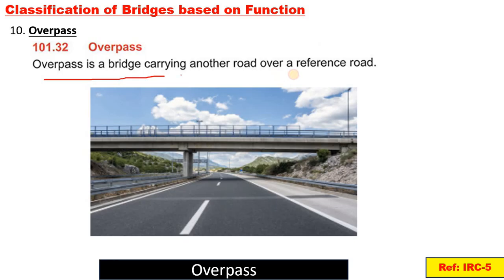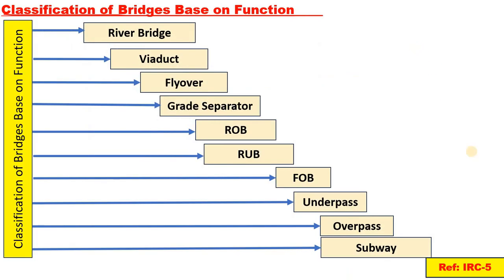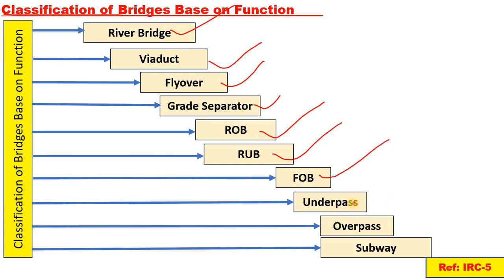An overpass is a bridge carrying one road over a reference road. To summarize, the classifications of bridges based on function as per IRC-5 are: river bridge, viaduct, flyover, grade separator, ROB (road over bridge), RUB (road under bridge), FOB (foot over bridge), underpass, overpass, and subway.